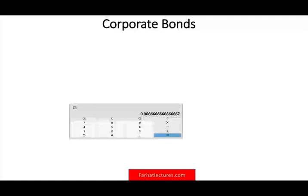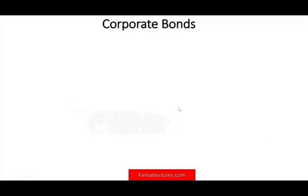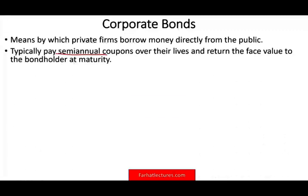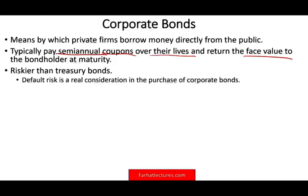Corporate bonds are the means by which private firms borrow money directly from the public. They typically pay interest semi-annually over their life and return the face value at maturity. They are riskier than treasury bonds because private companies can go out of business — there's a real risk of default. Therefore you need to check the bond rating: triple-A, double-A, A, triple-B, double-B, and so on.